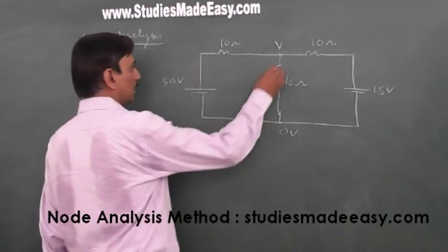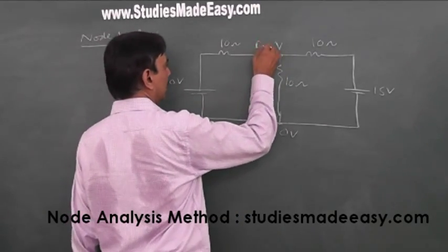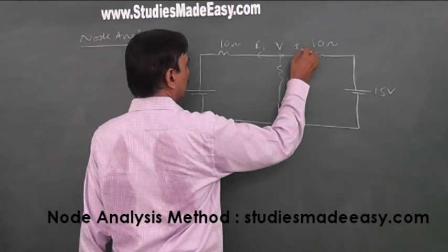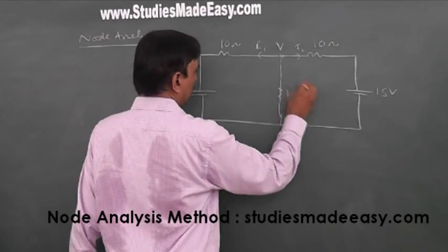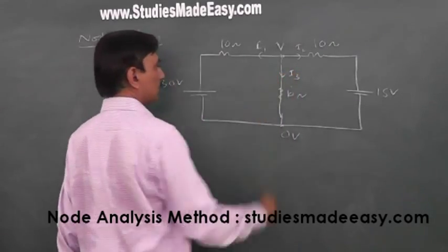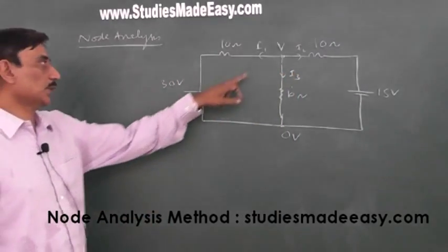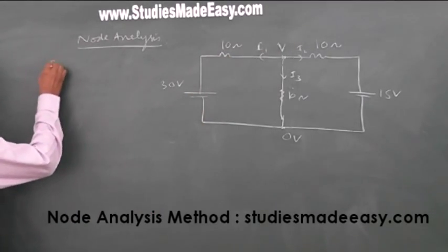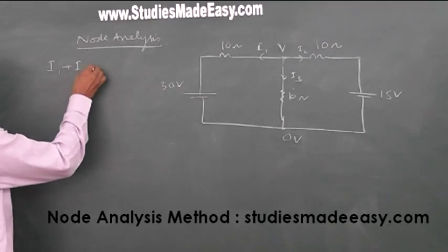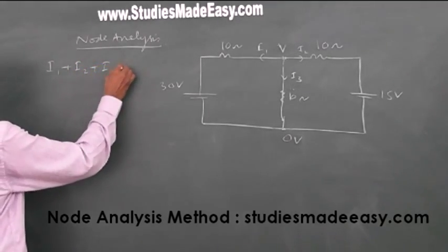Then I use Kirchhoff's current law. I call it as I1, I2 written by the distance over here, I3. So for this node, if I use KCL Kirchhoff's current law, I1 plus I2 plus I3 is equal to 0.